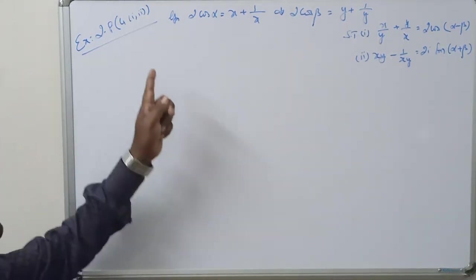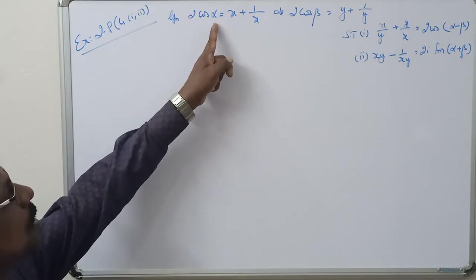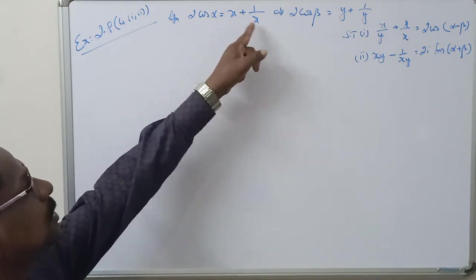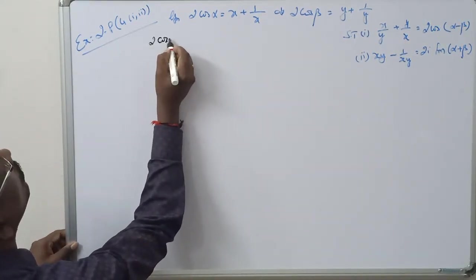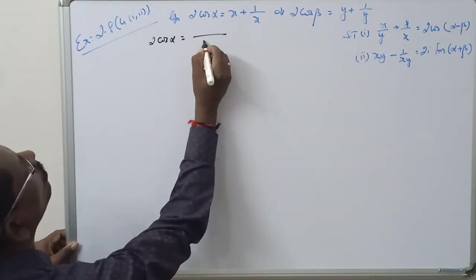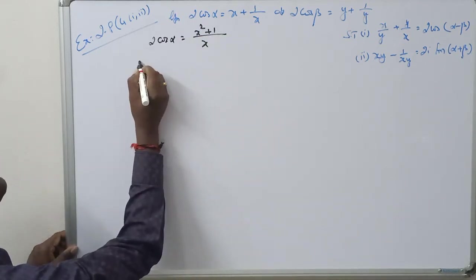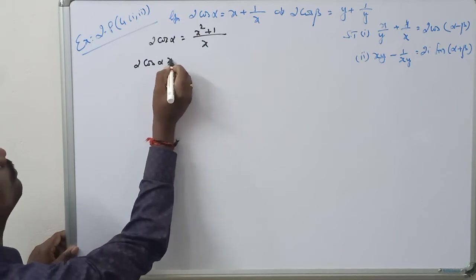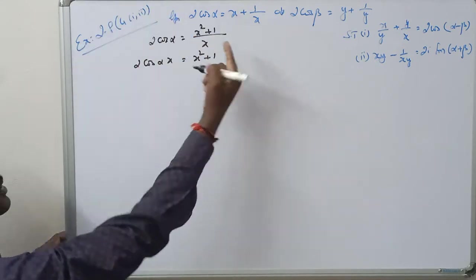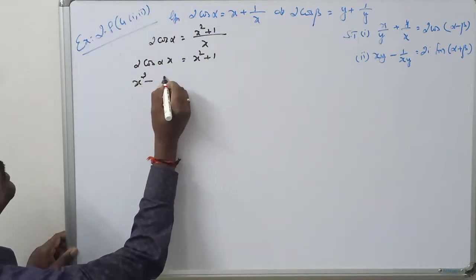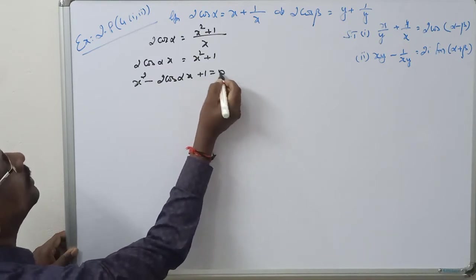Good morning everybody. Given 2cos α plus 2cos α equal to x plus 1 by x. Taking LCM: 2cos α equal to (x² + 1) by x. Cross multiplying: 2cos α · x equal to x² + 1. Rearranging gives x² minus 2cos α · x plus 1 equal to 0.